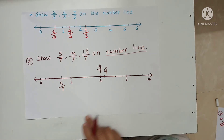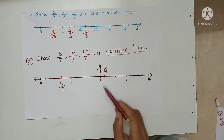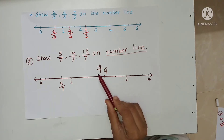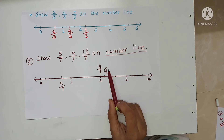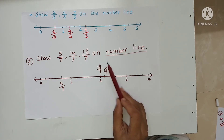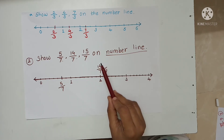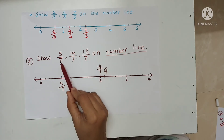If a fraction has to be shown on a number line, every unit of the number line must be divided into as many equal parts as the denominator of the fraction.